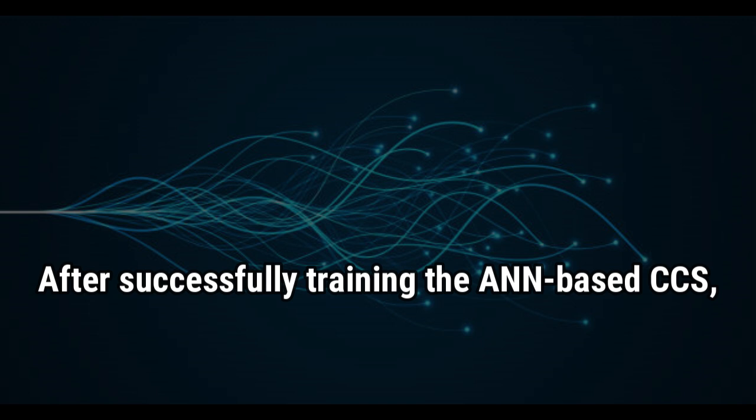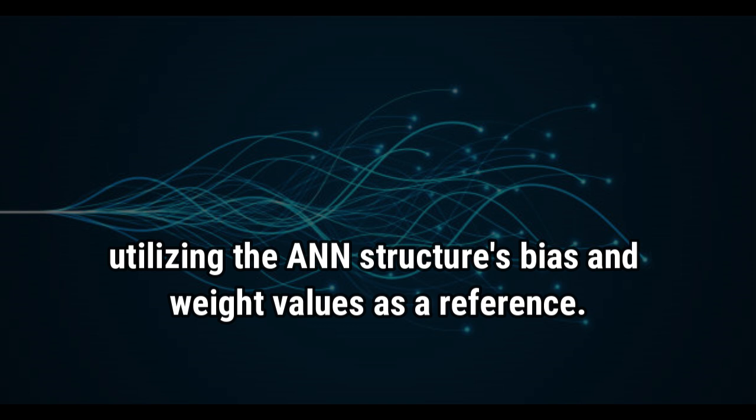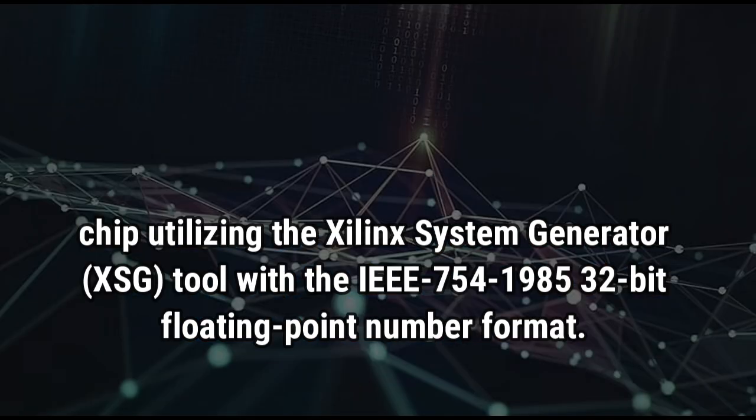After successfully training the ANN-based CCS, the design was carried out on FPGA, utilizing the neural network structure's bias and weight values as a reference. These two proposed systems were efficiently designed on a Field Programmable Gate Array (FPGA) chip utilizing the Xilinx System Generator (XSG) tool with the IEEE 754-1985 32-bit floating point number format.